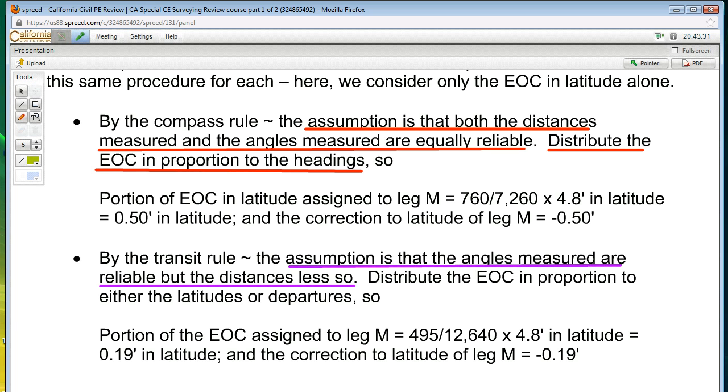So the portion of the error of closure in latitude that is assigned to leg M is going to be the heading of leg M divided by all of the headings all the way around. That ratio I put against my 4.8 feet in latitude which was given to me and we know that anything that is not zero in latitude, sum of latitudes, means that that's our error of closure in latitude. So for example, in this problem, the sum of the latitudes in the problem statement was 4.8 feet. For there to be zero error of closure in latitude, the sum of the latitudes has to be zero.